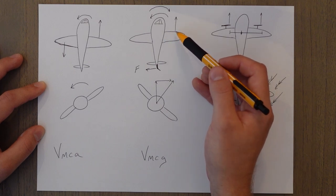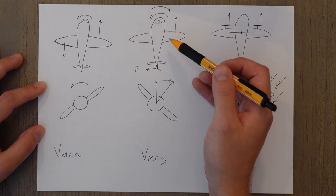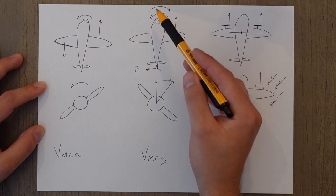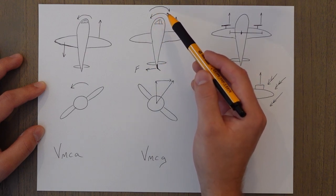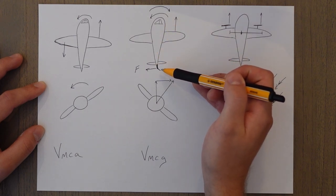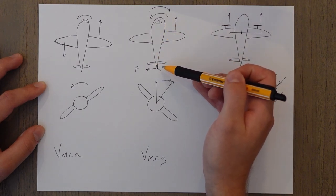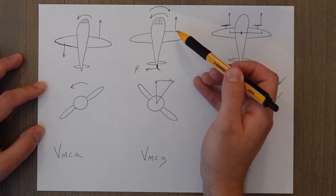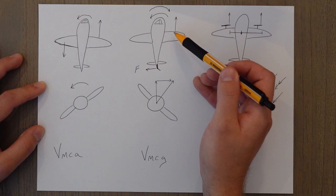So in this case here, we're deflecting the rudder to the right. That generates a force out to the left and that creates this corrective moment. The disadvantage is you now have this deflected rudder which is creating a lot more drag. You need to overcome that with thrust and you're already an engine down so your performance goes down quite a lot.